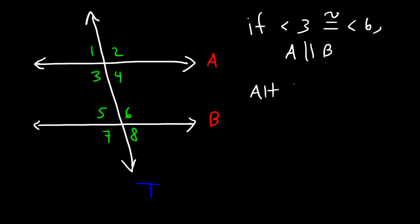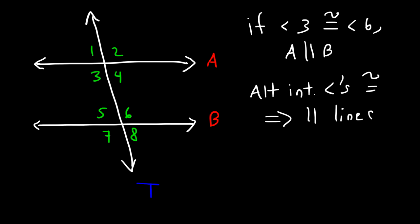So if the alternate interior angles are congruent, then the lines must be parallel. You can write this as the converse of the alternate interior angles theorem: if they're congruent, the two lines are parallel. This symbol means line A and line B are parallel; this other symbol means perpendicular lines.